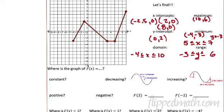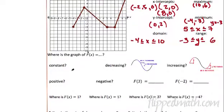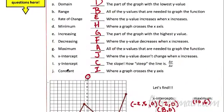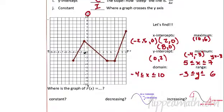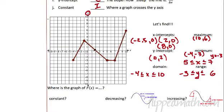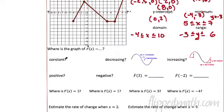Where is the graph constant? Constant is where the y value doesn't change when x increases. When we talk about x increasing, that means as we're traveling right on this graph, x is increasing — we're walking to the right, kind of like Mario in Mario Brothers. Where does the graph not change? It's between five and seven. So I'm going to write from five to seven, the graph is constant. It's that simple.